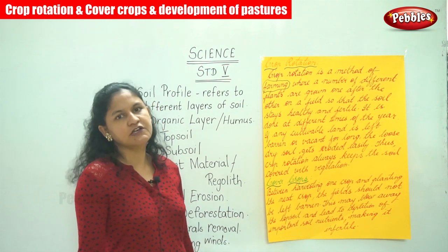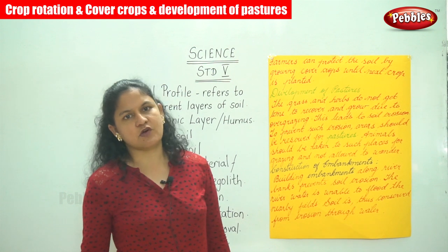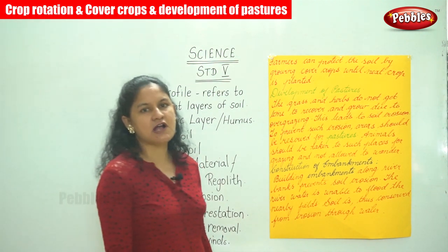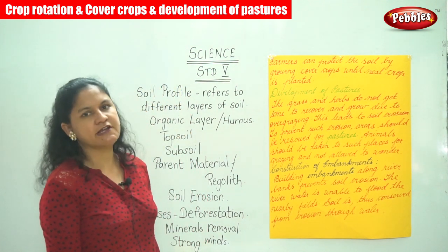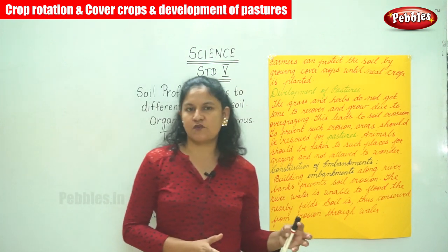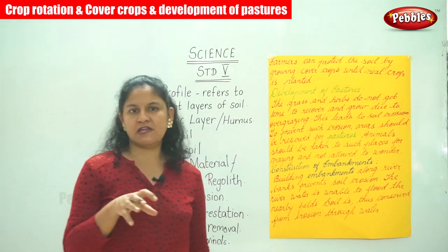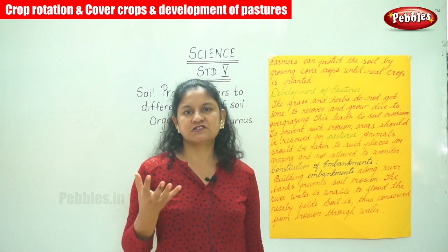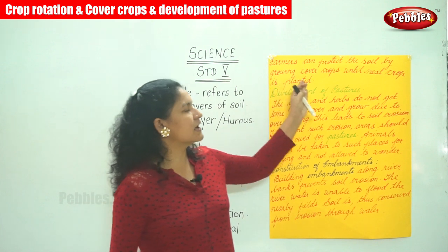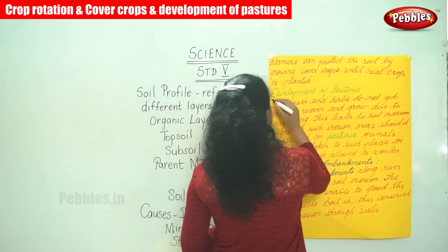Farmers can protect the soil by growing cover crops until the next crop is planted. The time between the harvesting of one crop and the planting of another crop there is a gap, and the soil should not be left barren, as it may lose the important soil nutrients. In that case, farmers can protect the soil by growing cover crops until the next crop is planted.